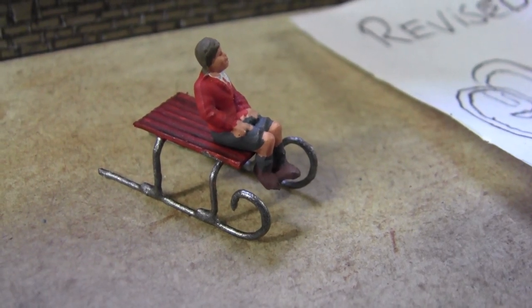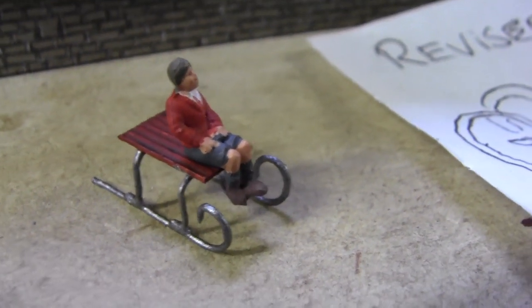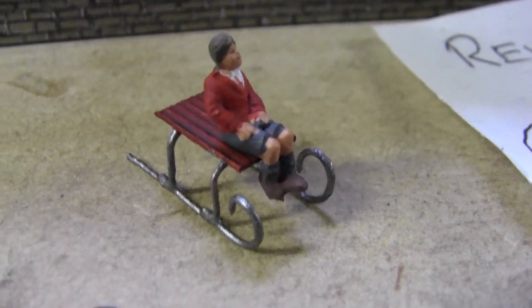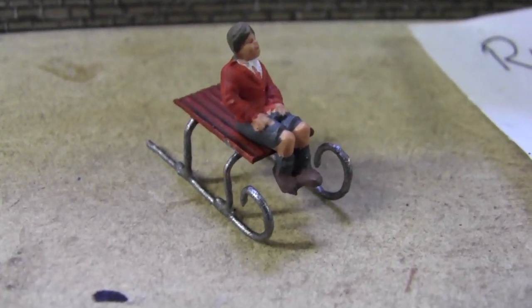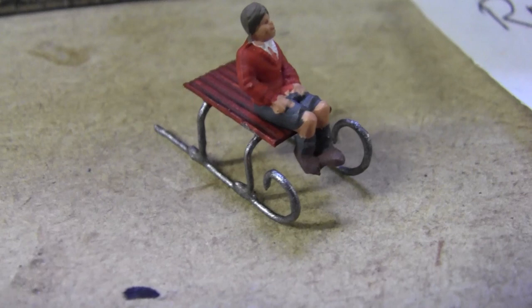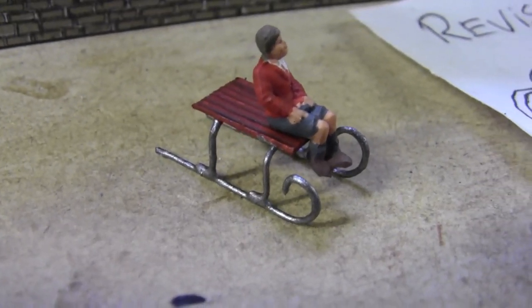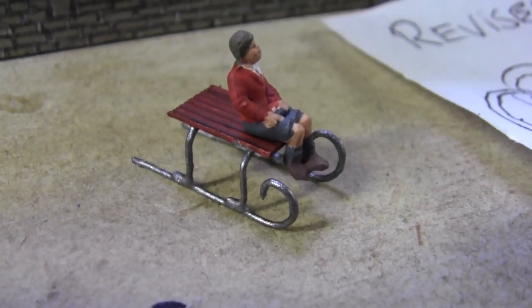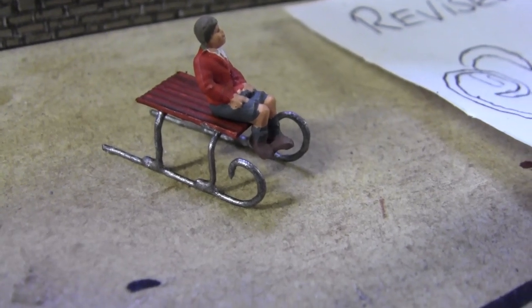And here we have one of the sledges complete. The others are still a bit damp and all I did for the seating was just a bit of card scribed with a pen and then painted a woody color.